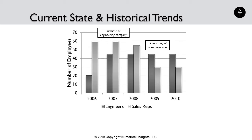In the example on this slide, you can see an upswing in engineers when the company purchased another engineering company in 2007. You can also see a reduction in the sales force in 2009. These types of occurrences will skew data like turnover rates depending on how the events were recorded.